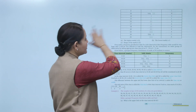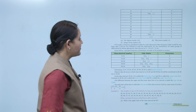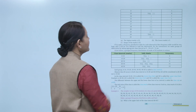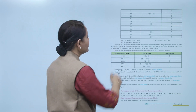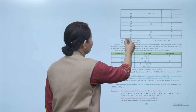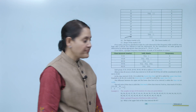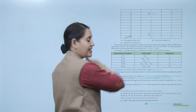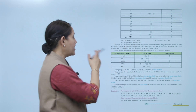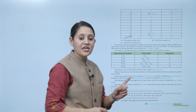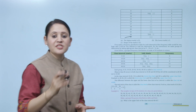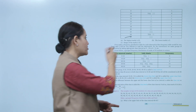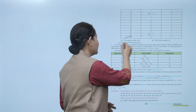From the table, the maximum (highest) mark is 25 and the lowest mark is 2. The range is the difference between the highest and lowest marks: 25 minus 2, that is 23.